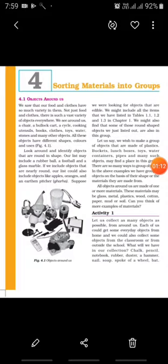So let's start the chapter. The first topic of this chapter is 'Objects Around Us.' We see that our food and clothes have so much variety in them. Not just food and clothes — there is a vast variety of objects everywhere. We see around us a chair, a bullock cart, a cycle, cooking utensils, books, clothes, toys, water, stones and many other objects.